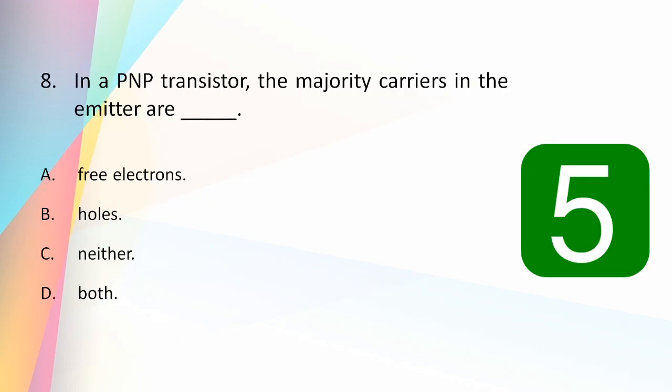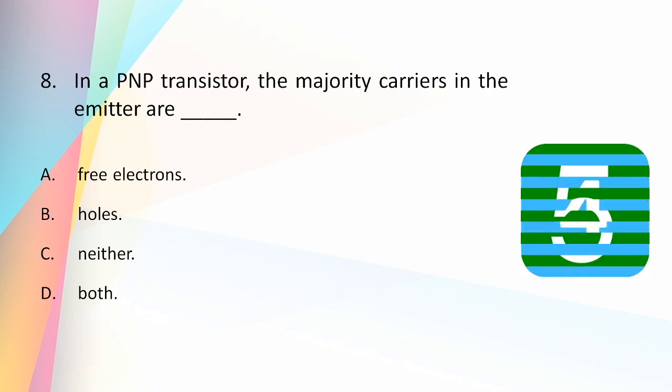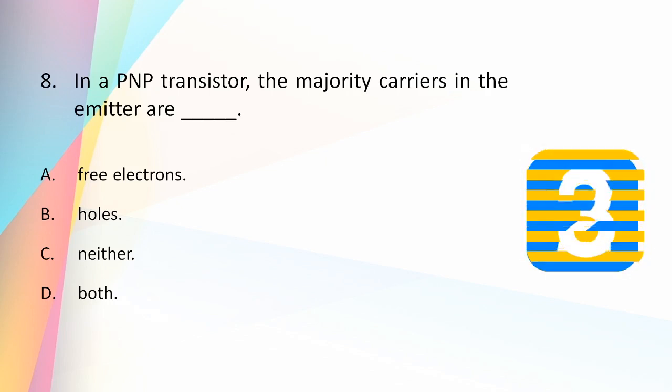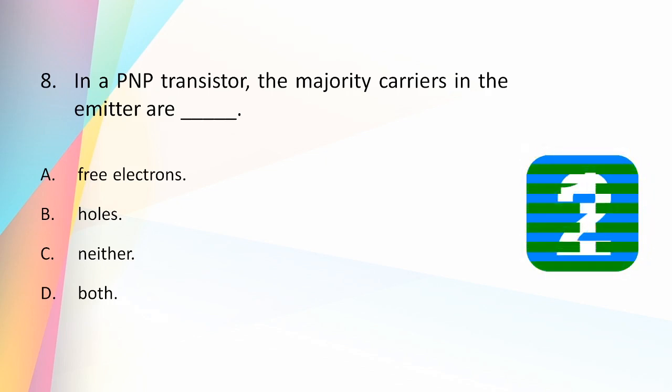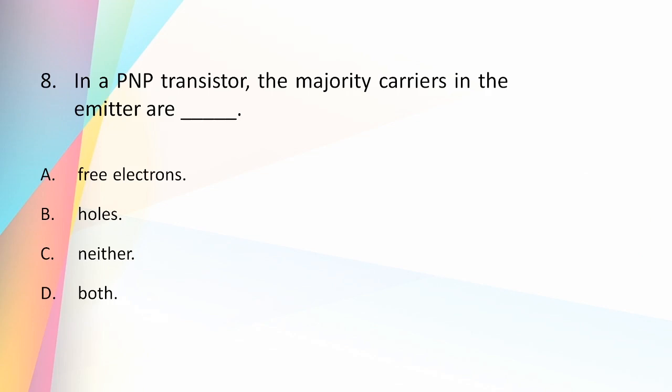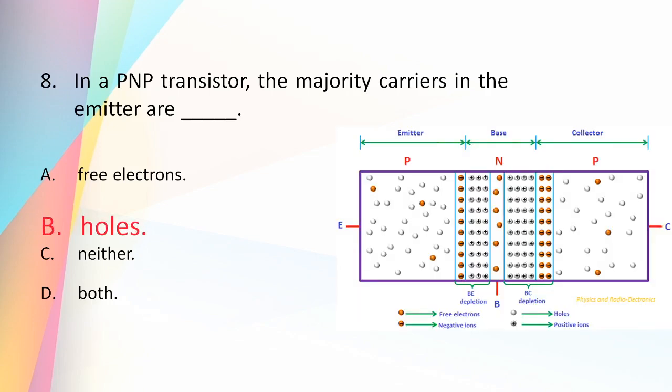In a PNP transistor, the majority carriers in the emitter are: free electrons, holes, neither, or both? The answer is holes — in a PNP transistor, the majority carriers in the emitter are holes.